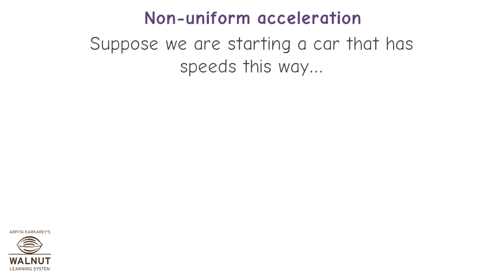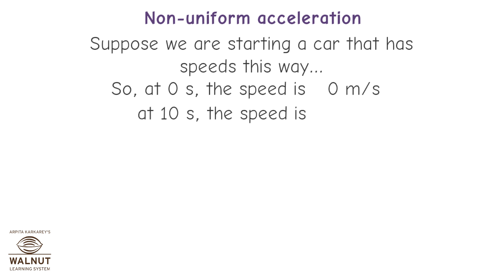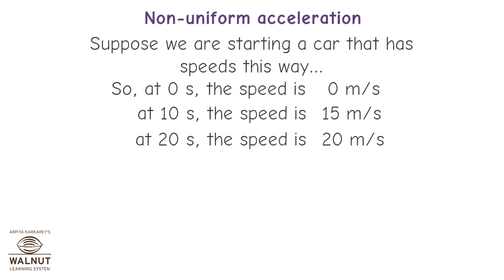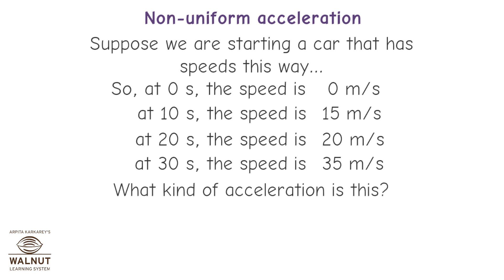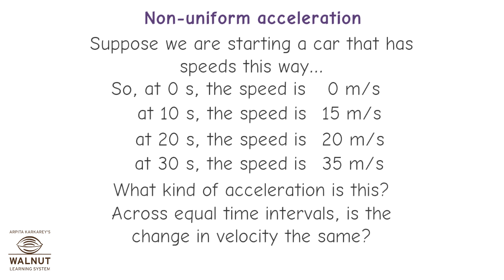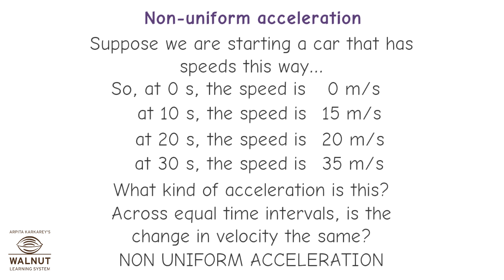Non-uniform acceleration: Suppose a car has the following speeds — at 0 s the speed is 0 m/s, at 10 s the speed is 15 m/s, at 20 s the speed is 20 m/s, at 30 s the speed is 35 m/s. Across equal time intervals, is the change in velocity the same? It is not — hence, this is non-uniform acceleration.